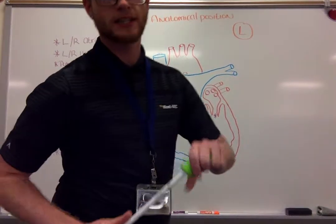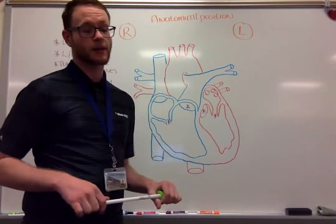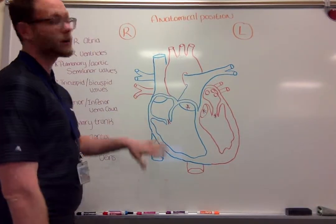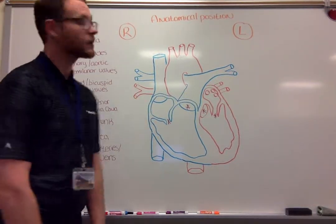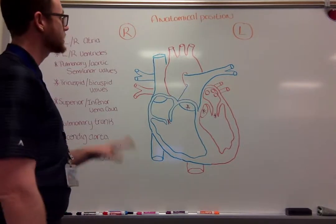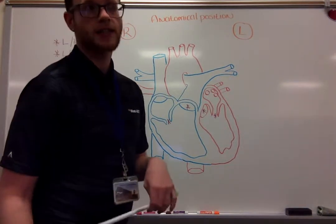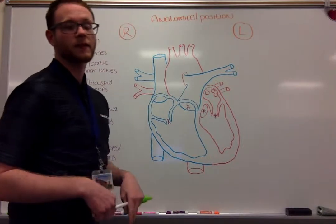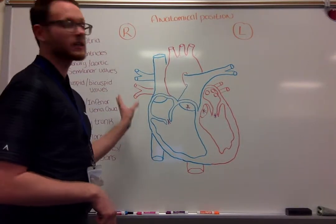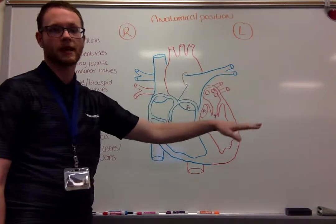Hello everyone. This is my heart blood flow model assignment project. I have drawn my heart on the board. I have all of the structures we're going to go over on the board as well, and we're just going to discuss the movement of blood through the heart from the systemic circulation to the pulmonary and then back out to the systemic circulation.